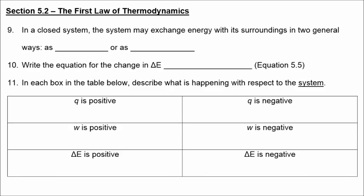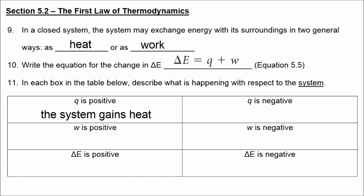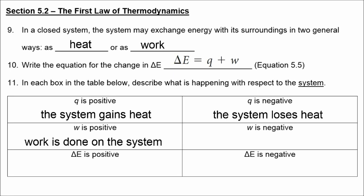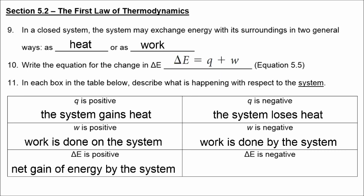In a closed system, the system may exchange energy with its surroundings in two general ways: as heat or as work. The change in internal energy is summarized by equation 5.5: delta E equals Q plus W, where Q stands for heat and W stands for work. If Q is positive, the system is gaining heat; if Q is negative, the system loses heat. If W is positive, work is being done on the system; if W is negative, work is being done by the system. If delta E is positive, there is a net gain of energy; if delta E is negative, there is a net loss.